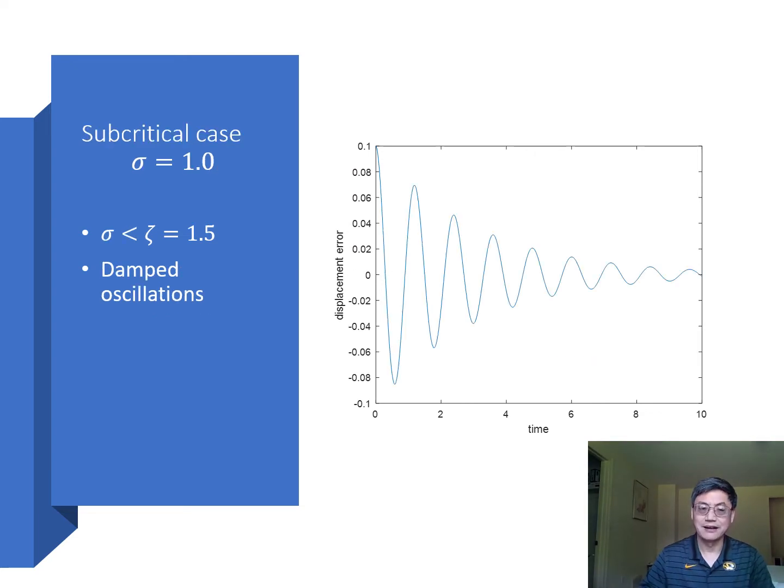Now with a subcritical feedback gain, σ equals 1.0. Here σ is less than the ζ value. What we see is that this equilibrium is stable. However, there's oscillation and what we see is a damped oscillation.